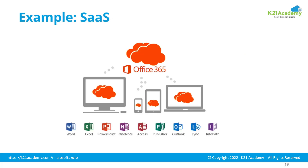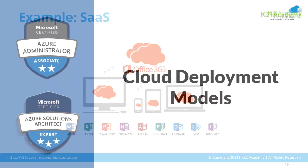An example of Software as a Service is Office 365, where you have Word, Excel, PowerPoint, email, Outlook, and other enterprise services. You simply buy the license and use the service — you don't need to worry about where it's hosted or managing servers. Another SaaS example is a paid version of Gmail: you only pay for licensed users and don't care about the backend servers at all.